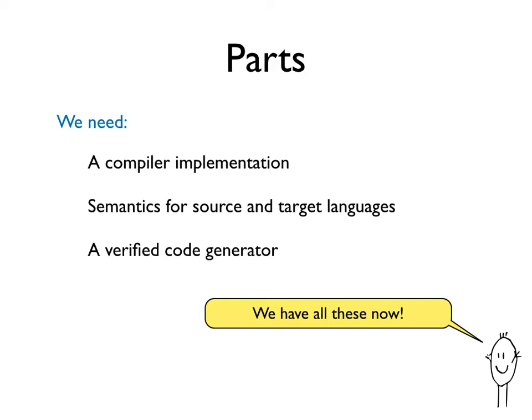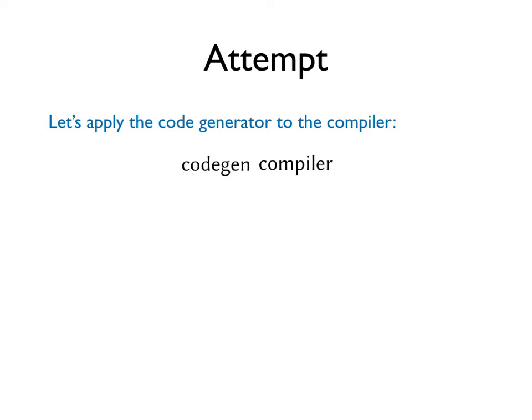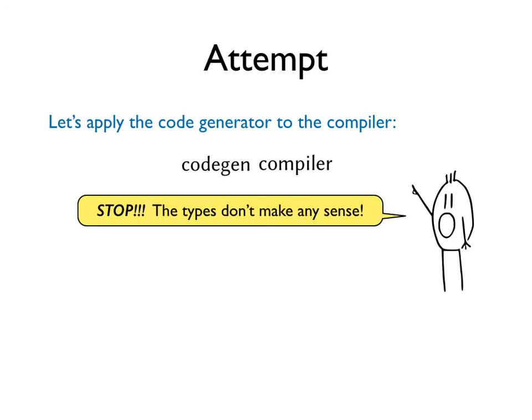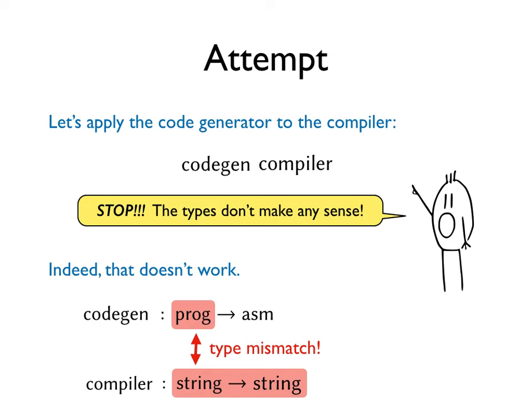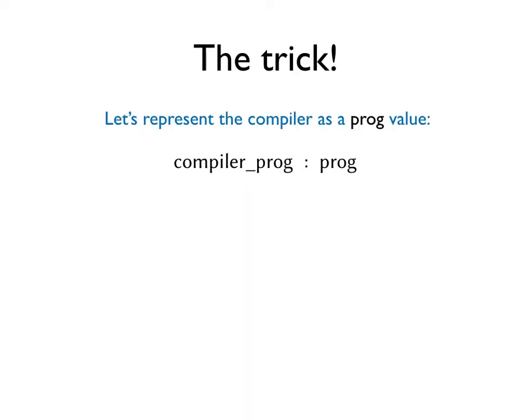So getting back to what we need, it looks like we have all these now. Let's attempt to bootstrap the compiler. Remember bootstrapping is applying the code generator to the compiler itself. Let's do it! At this point, someone will say, stop! The types don't make any sense! And indeed, applying the code generator directly to the compiler does not work because there is a type mismatch.